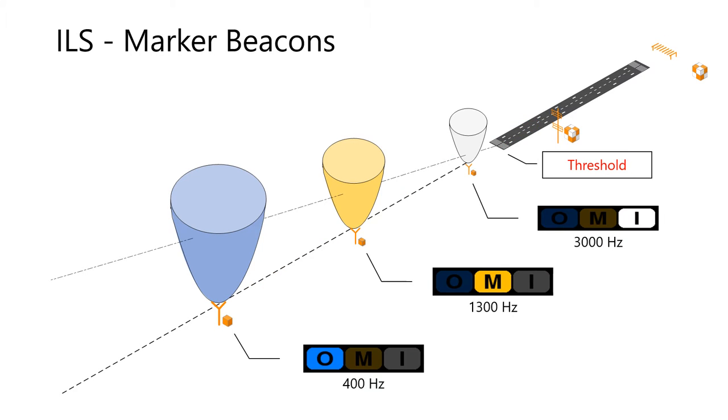The ILS marker beacons provide a pilot, when on final approach, a series of visual and audio indications in order to determine their location along the ILS approach, such as a final approach fix or decision height. They operate at 75 MHz and are modulated by the various audio tones shown.